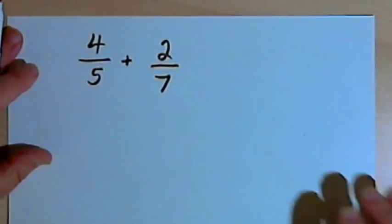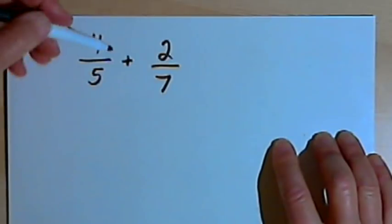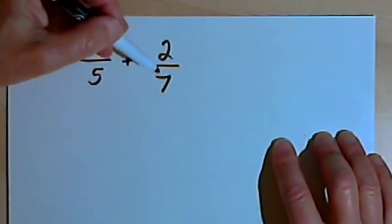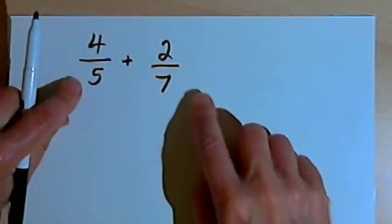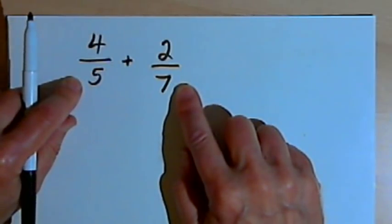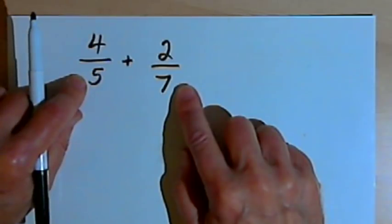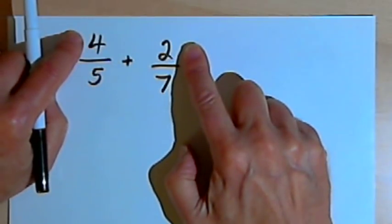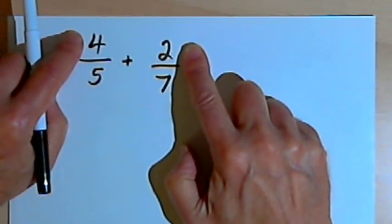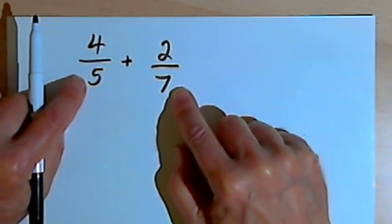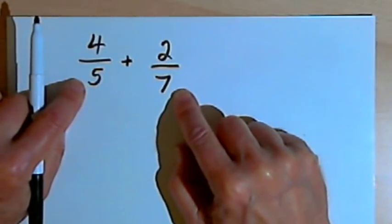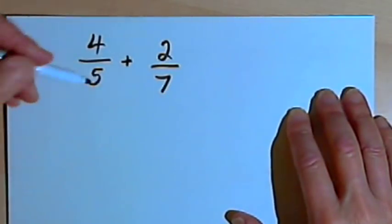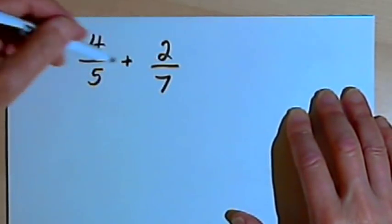Here's the first problem. I've got two fractions that I have to add: 4 over 5 and 2 over 7. Now they have different denominators. If the denominators were the same, this would be an easy problem — all I would have to do is add the numerators together, and that would be the new numerator, and the denominator would stay the same. But when the denominators are different, I have to do a little more work. What I've got to do is find a common denominator for both of these fractions.